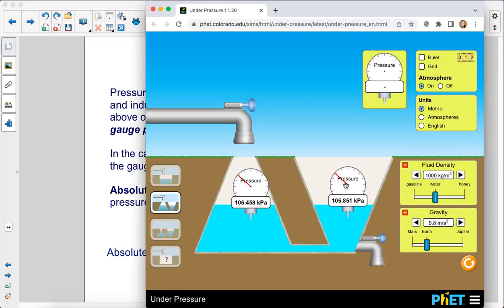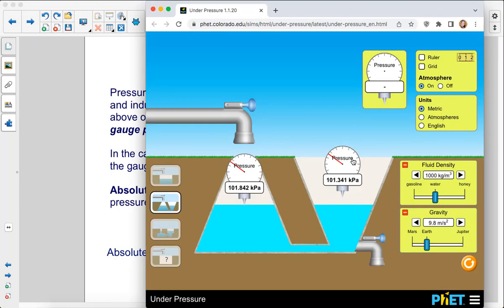So in our PhET simulation, remember if you're in the air above the fluid, you have that approximate 100,000 pascals of pressure just due to the air, the atmosphere here. And if you go below that, you're starting to add on pressure due to the weight of the fluid above that point.